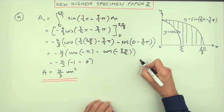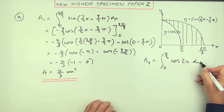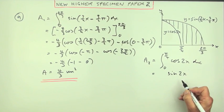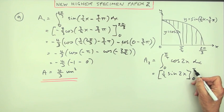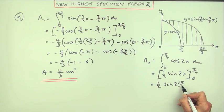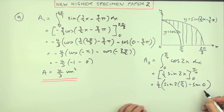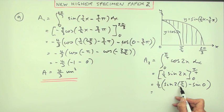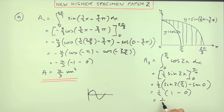Now for the small area — Area 2. It goes from zero to pi upon four of cos 2x dx. That's much more harmless looking. Cosine integrates back to sine as a positive sign. It's a function of a function, so differentiating multiplies by two; integrating divides by two. Evaluated from zero to pi upon four: it's one half of the sine of two times pi upon four, minus one half of the sine of zero. That's one half of the sine of pi upon two, which is one, minus zero. So Area 2 is one half of a square unit.